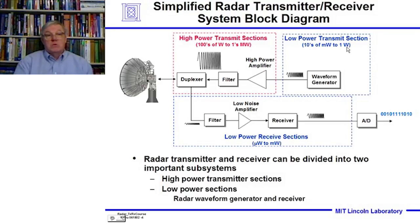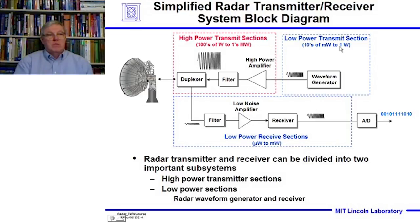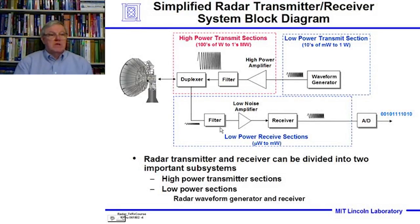Tens of milliwatts to a watt. After we upconvert them, there will be a very high power transmitter section where we amplify the signal very strongly — from fractions of a watt up to millions of watts. And then the echo that comes back is tiny — microwatts to milliwatts.